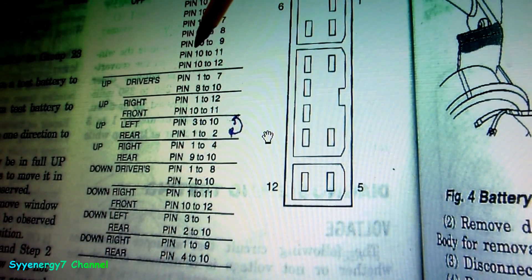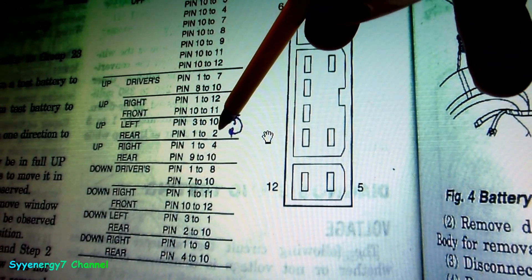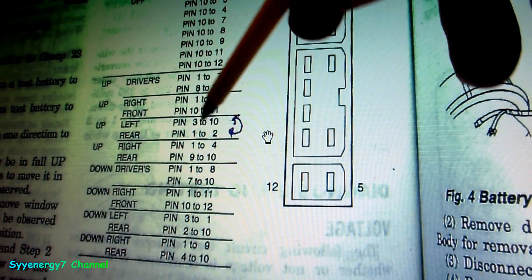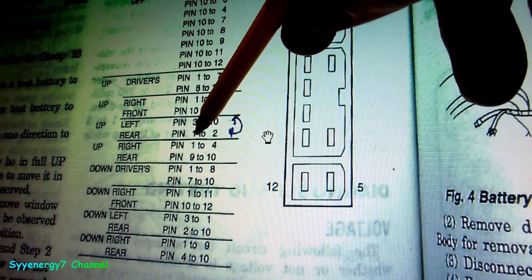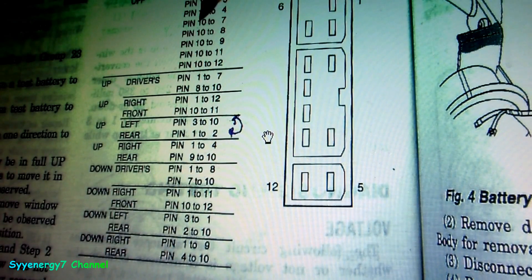Now this I noticed was backwards in this manual. This actually should be 1 to 2 is up left, and 3 to 10 is the power. They have a misprint in the manual. But 10 is feeding the power to these other pins.